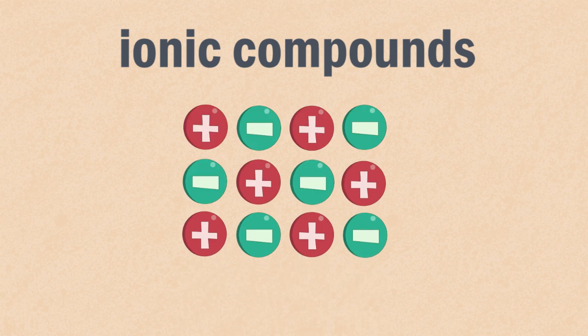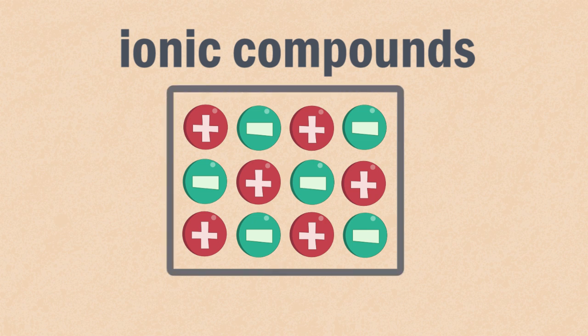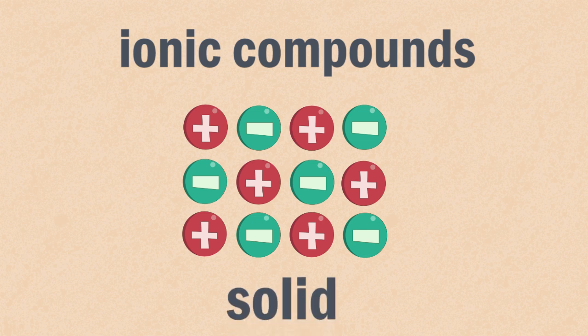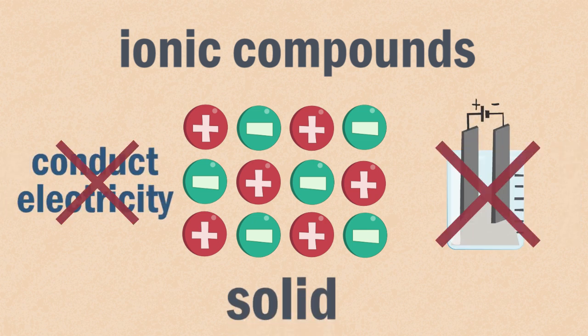Ionic compounds are formed by the strong electrostatic bonds between positive and negative ions. The oppositely charged ions are locked into a rigid and regular structure and since the ions are fixed in position and aren't free moving, an ionic solid cannot conduct electricity or undergo electrolysis.